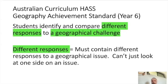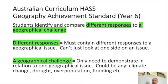They have to provide different responses to a geographical issue — the positives and negatives, for example. You can't just look at one side. Also to be at standard, it doesn't say multiple geographical challenges — it says a geographical challenge. It's really important to look at those clarifiers. Students only need to demonstrate in relation to one geographical challenge. It doesn't define what that challenge could be — it could be climate change, drought, overpopulation, flooding, or something of interest to your students.